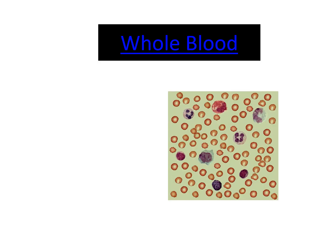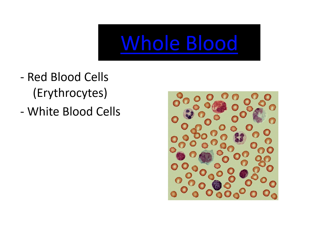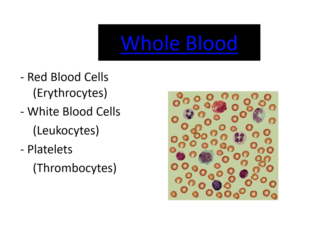Let's talk about whole blood. Whole blood contains red blood cells known as erythrocytes, white blood cells known as leukocytes, platelets known as thrombocytes, and plasma, also known as lymph.